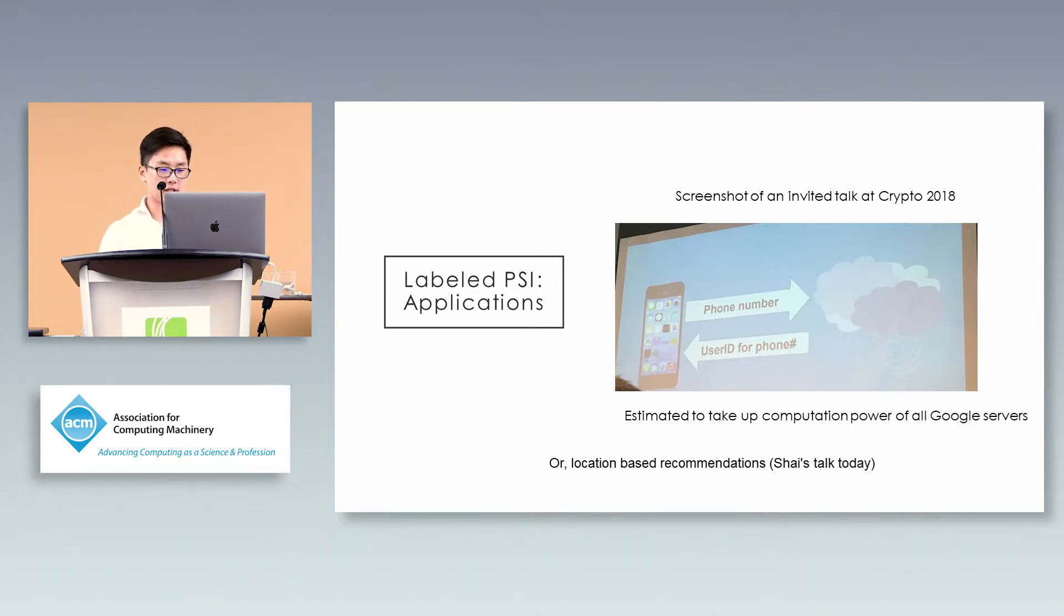They did this estimation eight to ten years ago, and at that time it was thought too expensive—it would take all the computing power of all Google servers. My guess is they didn't implement it. But now it's in a stage where it's more practical. Another application I learned from Shai's talk this morning is location-based recommendations. I can submit my location as key, and the value could be the best coffee shop for that location, so I can get recommendations without sharing my location.